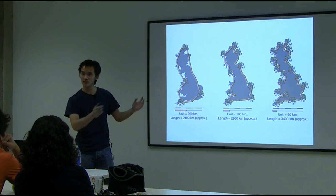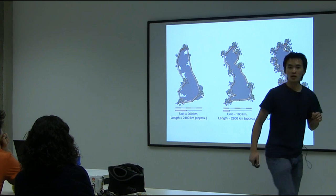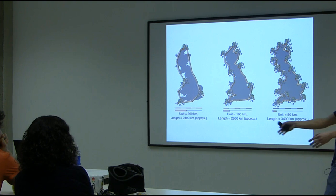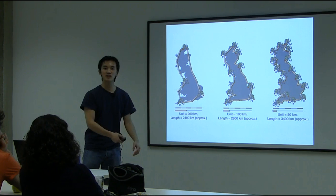You can actually do that. If I did it, it would take a lot of time, so let's imagine a giant doing that. Say the giant makes steps which are 200 kilometers long — a giant walking all over the British coastline. It would take him about 2,400 kilometers to go all around. But if you take a smaller giant making steps of 100 kilometers, he would have to be zigzagging more, which would make his walk longer — actually 2,800 kilometers.